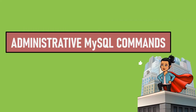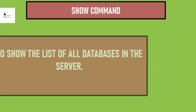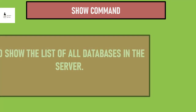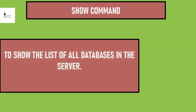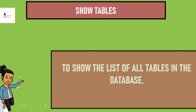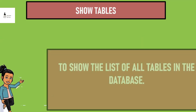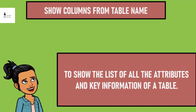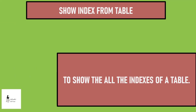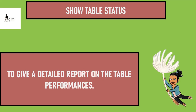Administrative MySQL commands: SHOW command is used to see the list of all databases available in the server. SHOW TABLES is used to see the list of tables in the database. SHOW COLUMNS FROM table_name is used to see all the attributes and key information of a table. SHOW INDEX FROM table shows all the indexes of the table. SHOW TABLE STATUS gives a detailed report on the table and its performance.